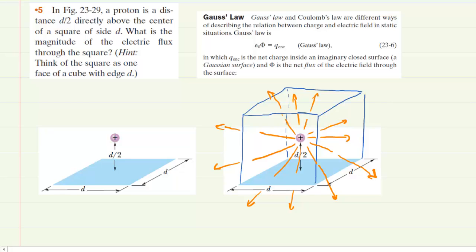So in this question we have a proton that's hovering above this blue square surface and we are asked to determine the electric flux through that square surface.